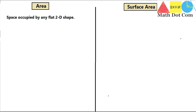Area is basically the space occupied by any flat 2D shape. This is a very simple definition — area is found for any shape that is two dimensional, meaning it has only two dimensions: length and width, or length and height. So you can say that area refers to the space occupied by any two-dimensional shape.